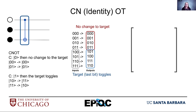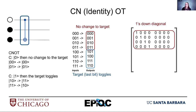If the control is 1, the target toggles, so those last four combinations have the third bit toggling. Now I want to take this truth table and transfer it into a matrix. Each of the inputs is a row of the matrix. The top four don't change, so they must match an identity matrix — the ones go down the diagonal. The row is the input and the column is the output. We put a 1 at coordinates (0,0), (1,1), (2,2), and (3,3).